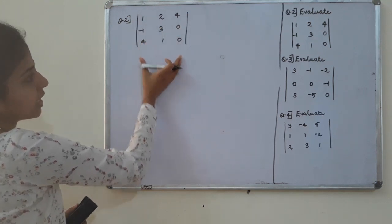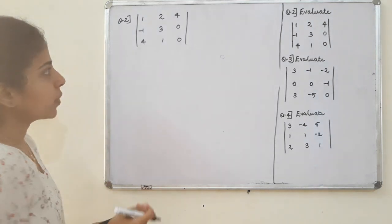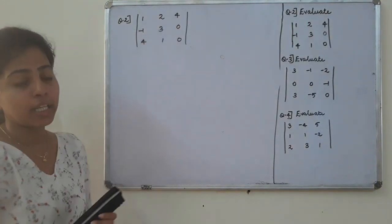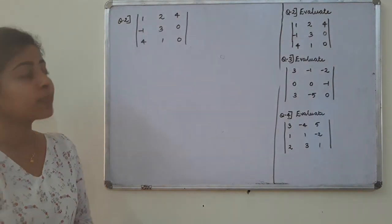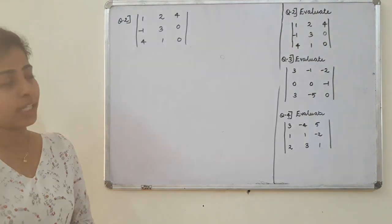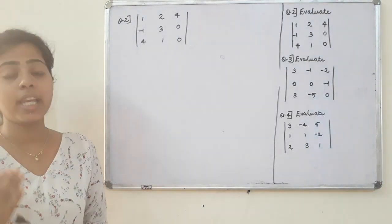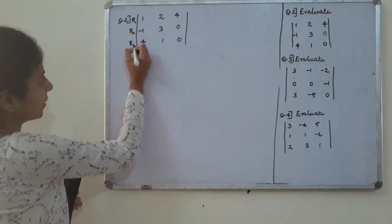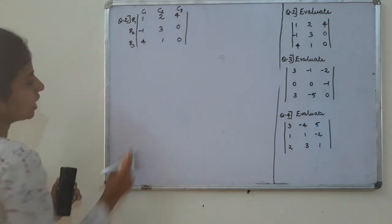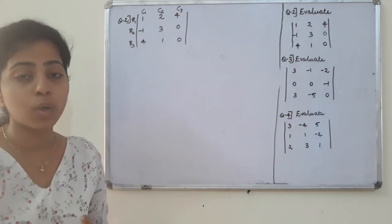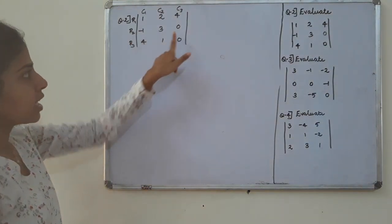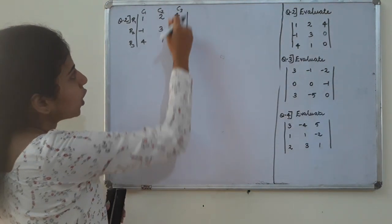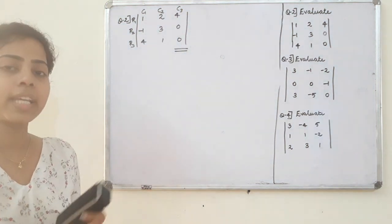We will write the term in any direction. We will write the term and expand. We have column 1, column 2, column 3, and row 2, row 3. That is expanding.